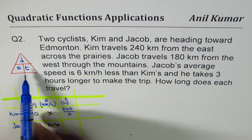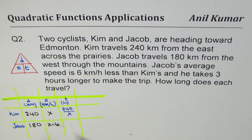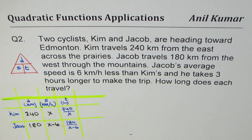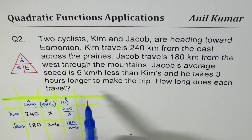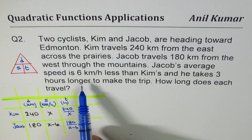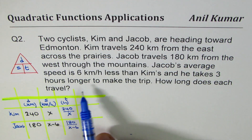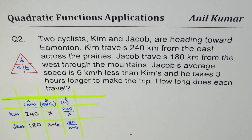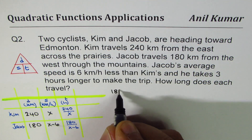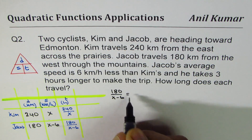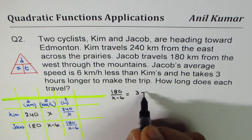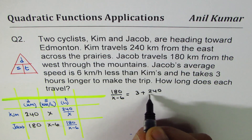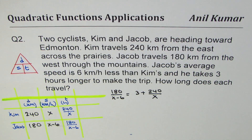Time is distance divided by speed. So Kim's time is 240 divided by x, and Jacob's time is 180 divided by x minus 6. The condition given is that Jacob takes 3 hours longer, which means 180 divided by (x minus 6) equals 3 plus 240 divided by x. That is how you get an equation in a single variable.